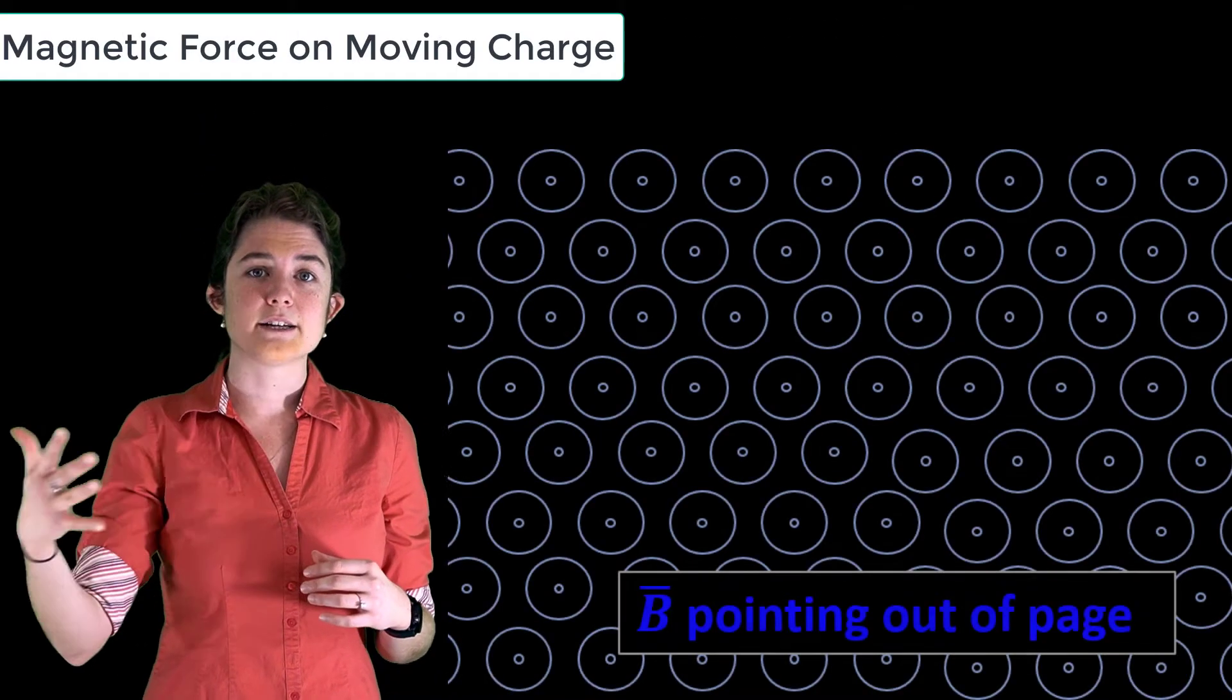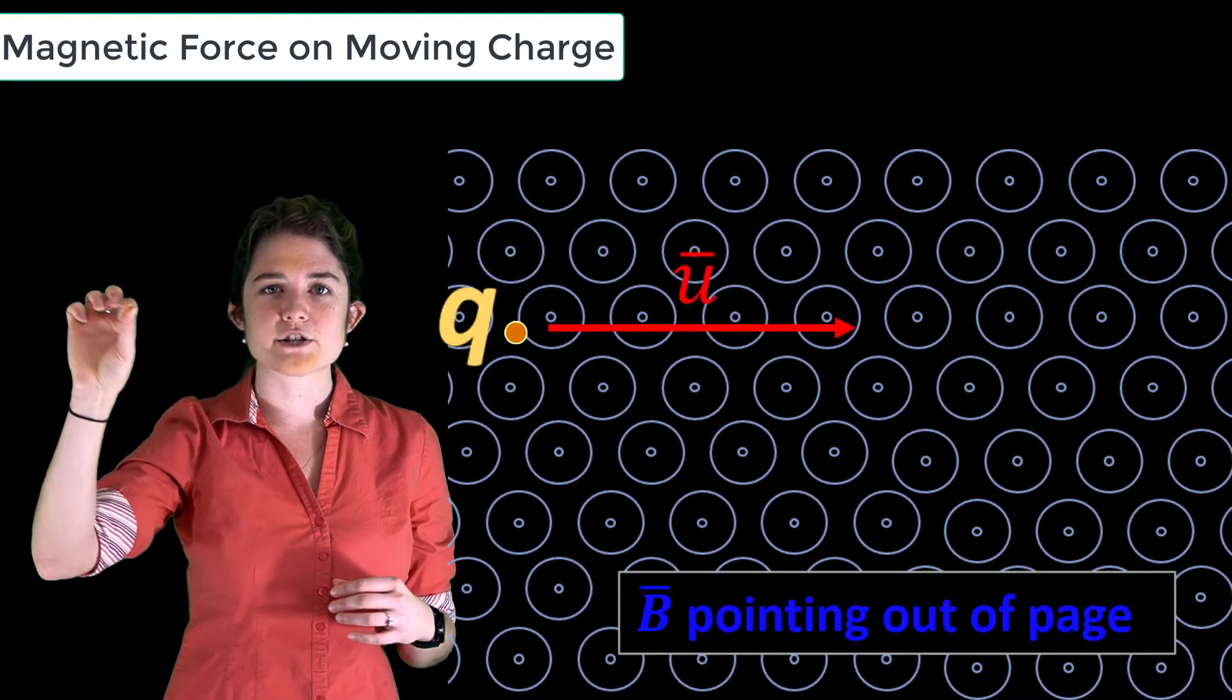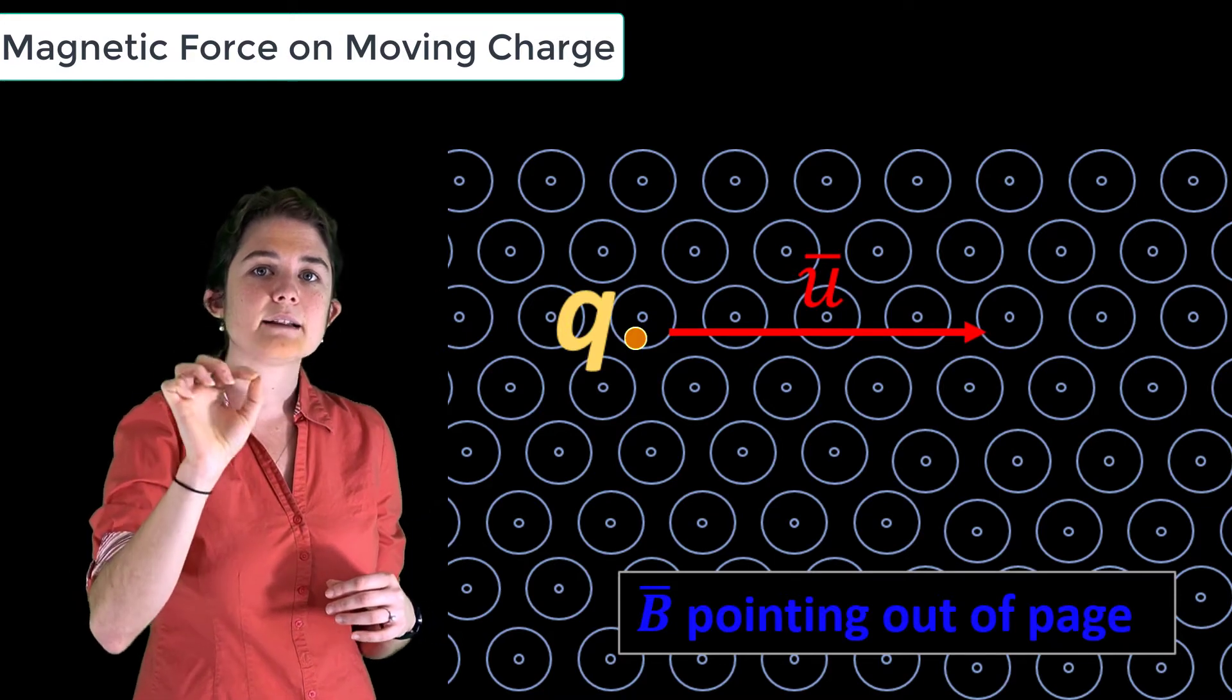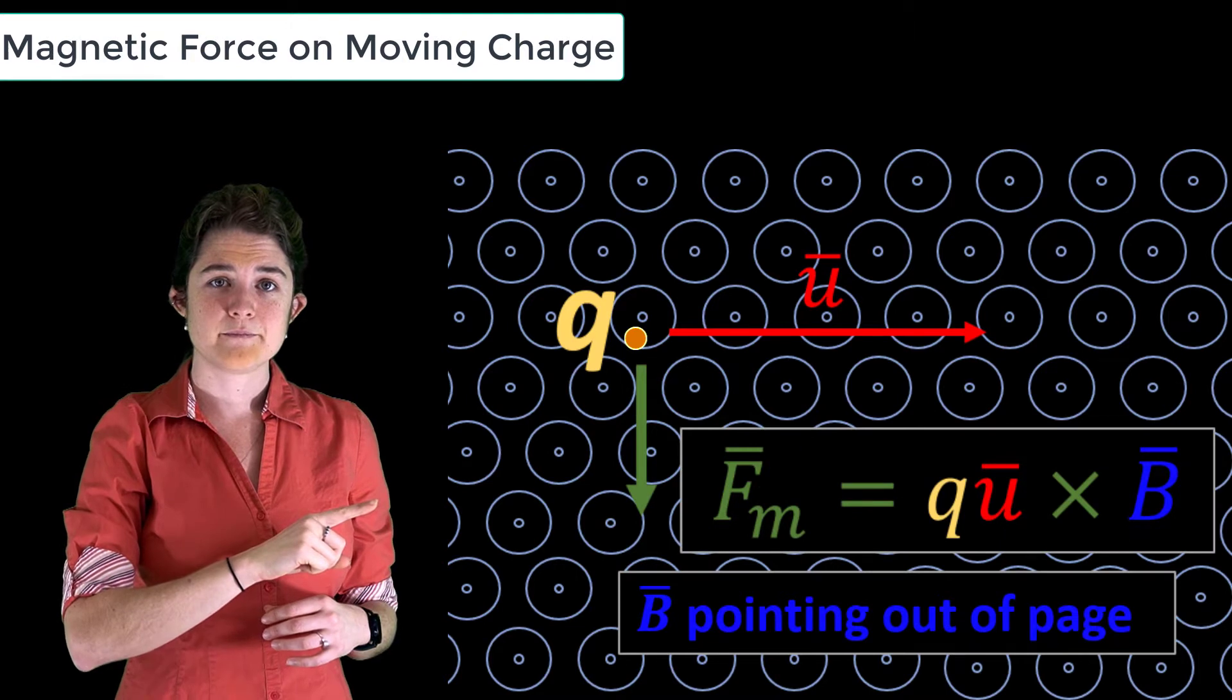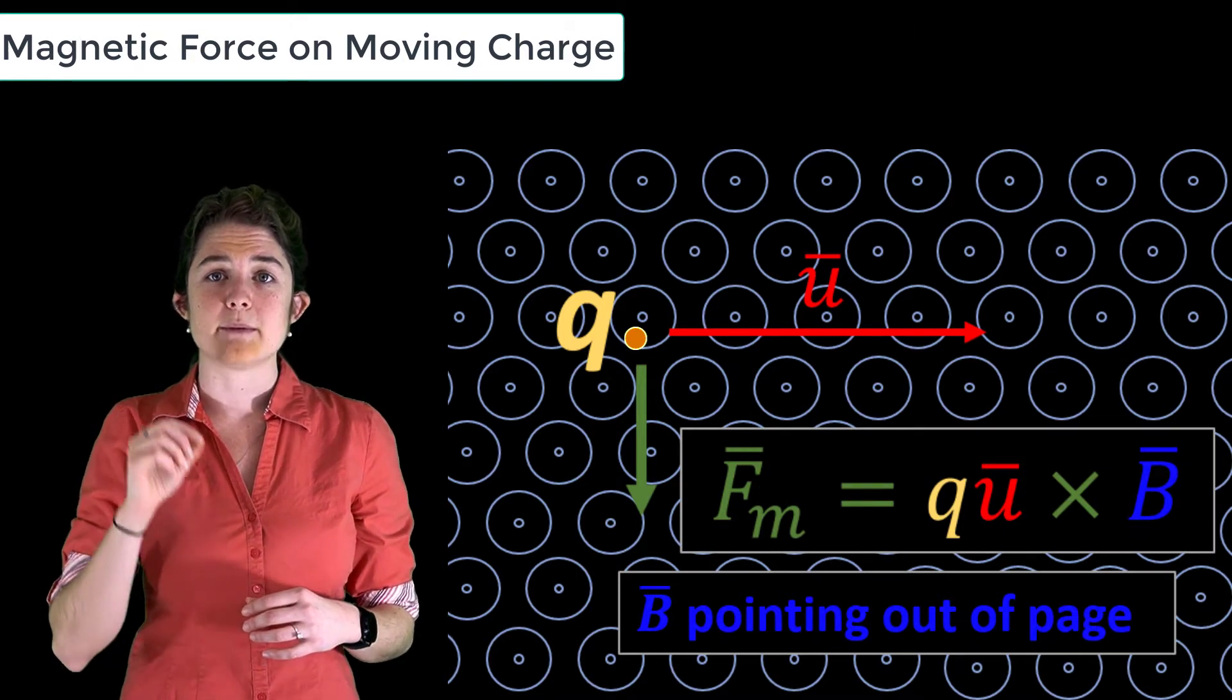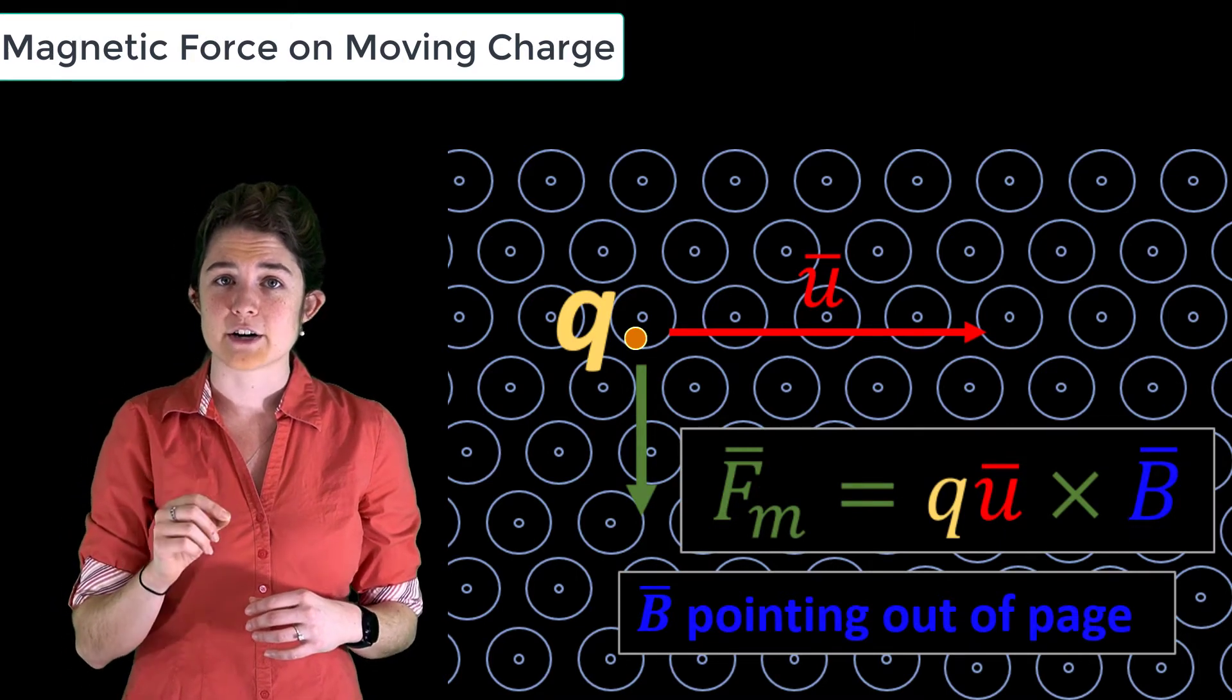If a magnetic field exists in a region and a moving electric charge enters that region, that electric charge will experience a force. According to this equation, the force exerted by a magnetic field on a moving electric charge is